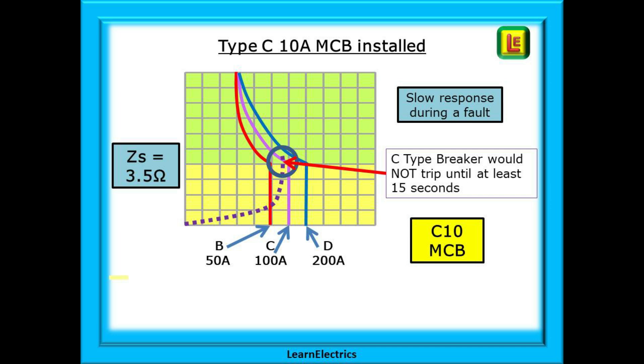The C type MCB is less sensitive. Because the ZS remains at 3.5 ohms, the device does not trip in 0.4 seconds as it should. In our example, it could be 10 to 15 seconds before it operates. The C type needs 100 amps to guarantee it trips in less than 0.4 seconds and we have now put the customer in danger during a genuine fault.